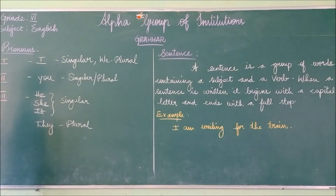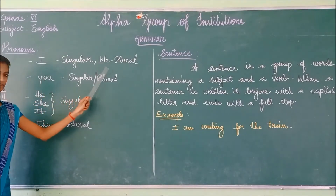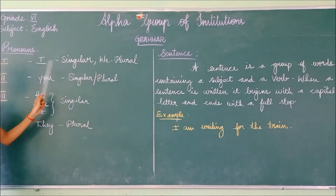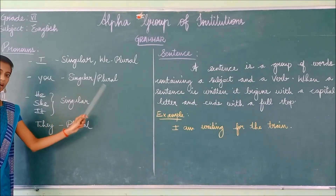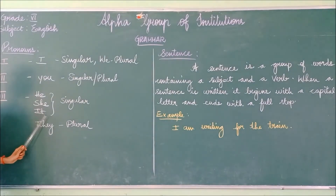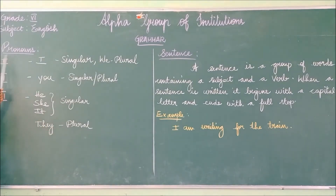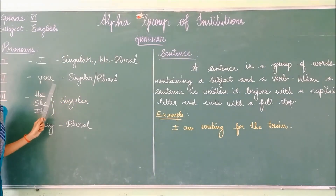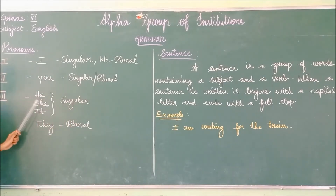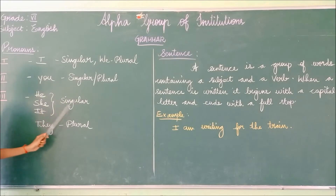Next we are going to see about pronouns. In pronouns there are three persons. First person: I, we — I is singular, we is plural. In second person there comes you — you is both singular and plural. In third person: he, she, it and they — he, she, it are singular and they is the plural.